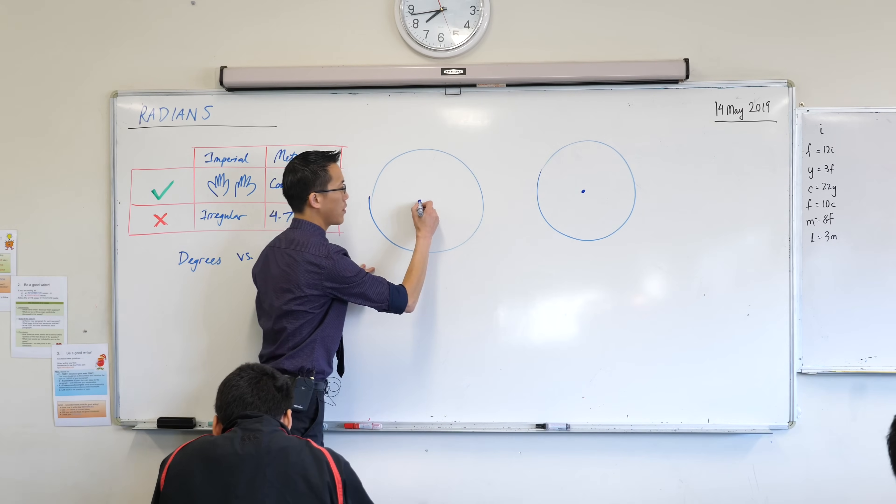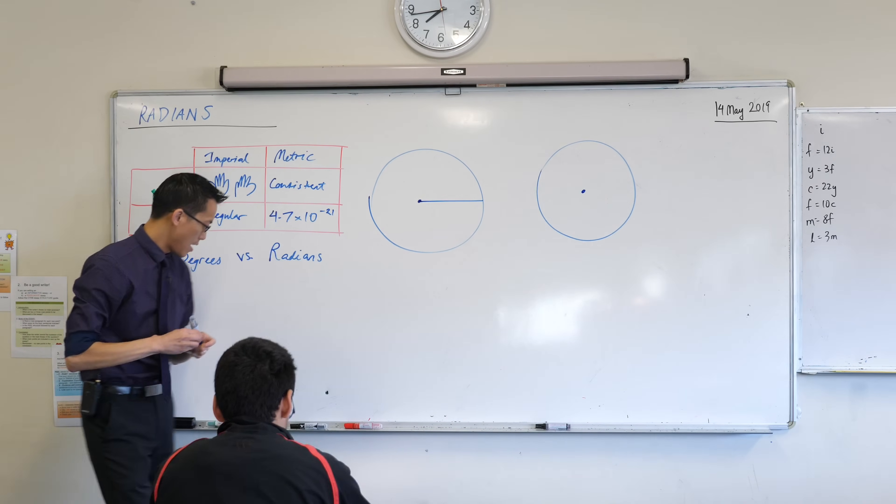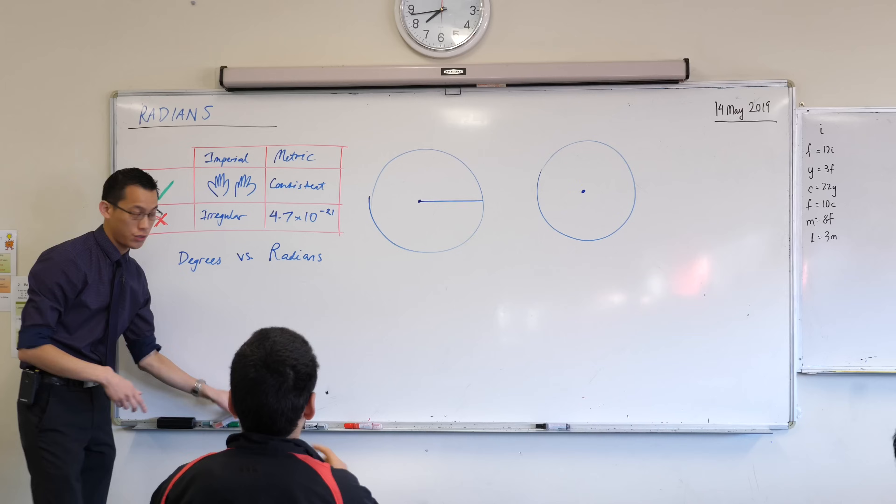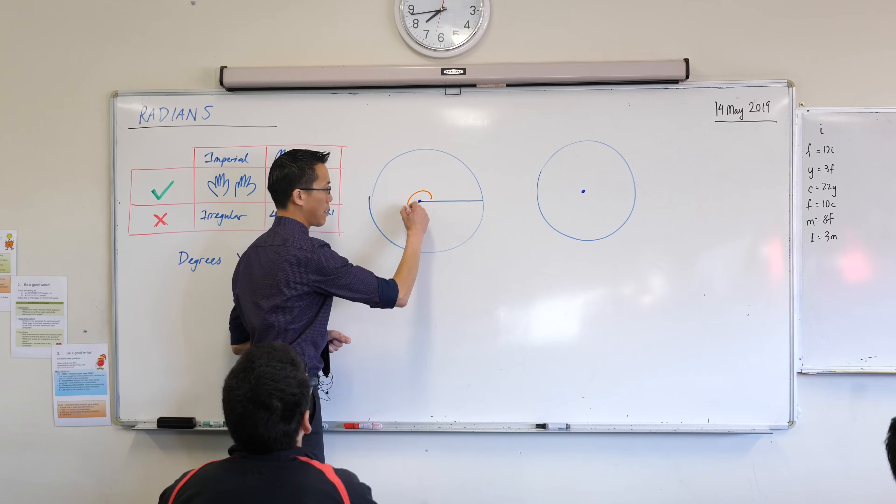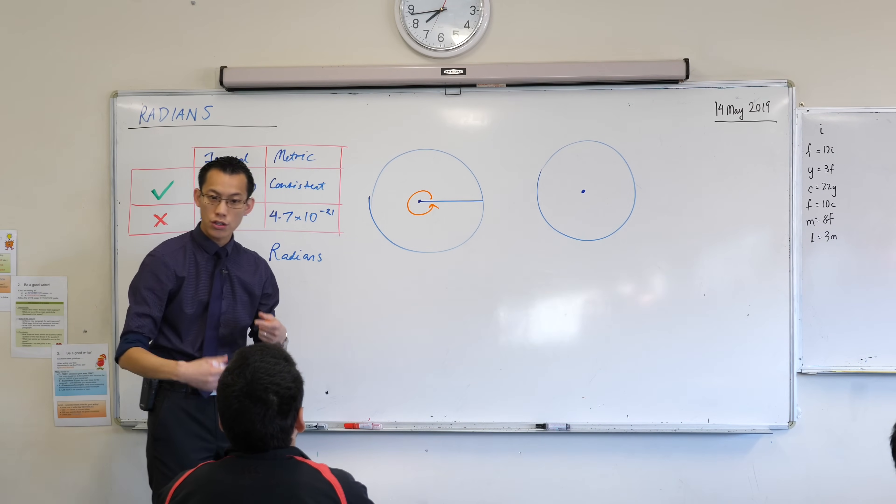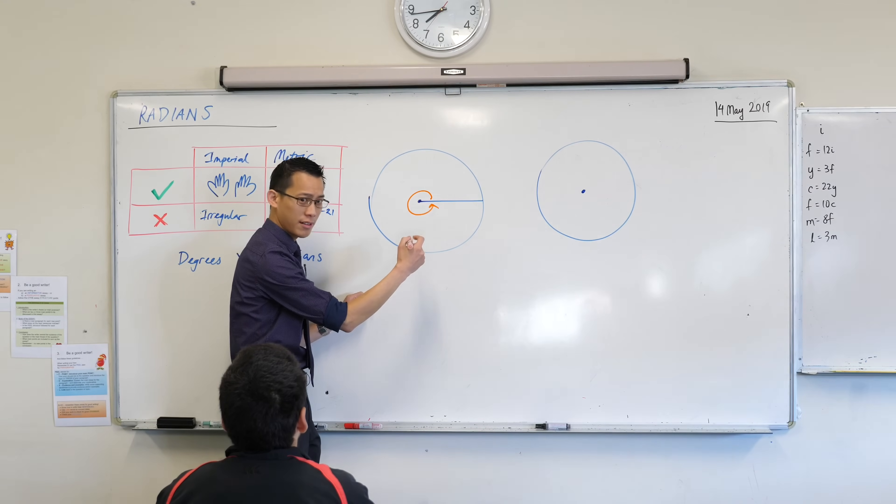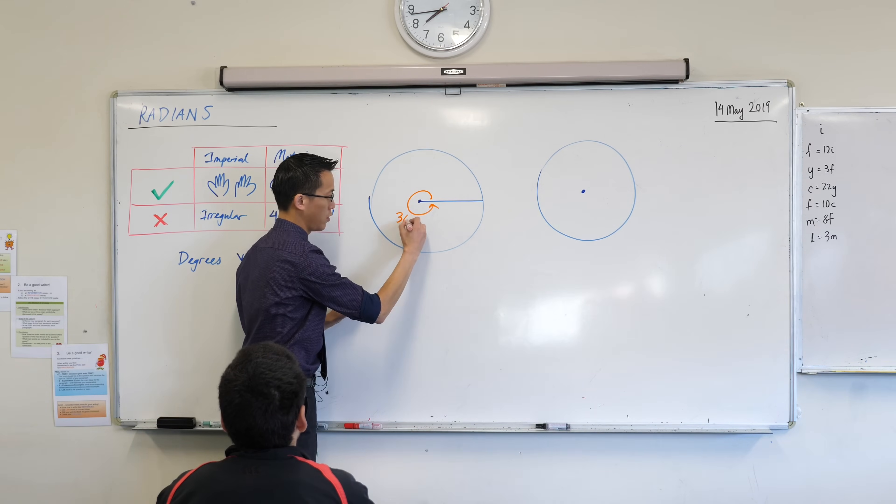Now, we already said, right at the top, if we had a full revolution, a full revolution like so, we're used to calling that how many degrees again? 360. Good. We're familiar with this, right?